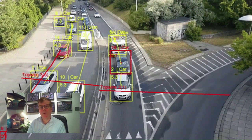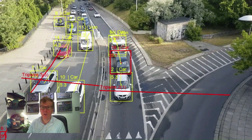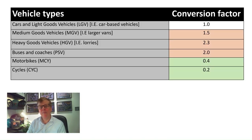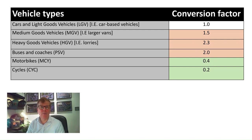In order to account for traffic composition in the design process calculations, it is normal to convert the classified count data into passenger car units, referred to as PCUs for short. These equate to a nominal 5.75-metre vehicle length. We use these conversion factors on classified count data to convert to PCUs.